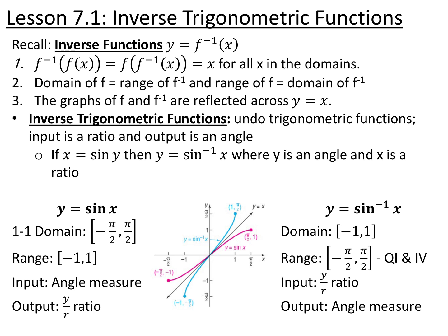Inverse trig functions undo regular trig functions. The input is your trig ratio, and the output will be your angle measurement. So if you have x equals sine of y, where y is your angle measurement and x is the corresponding ratio, then the angle measurement y is equal to the sine inverse of x. This is how we denote sine inverse — it's not sine to a negative 1 power; it's the function sine inverse of x.